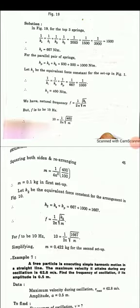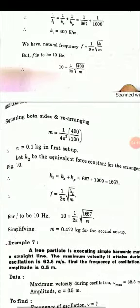Let k2 be the equivalent force constant for the second figure arrangement. k2 is equal to ks plus kp, so 667 plus 1000 gives 1667. Substituting again in the frequency formula: f equals 1 divided by 2 pi, square root of k2 divided by m.